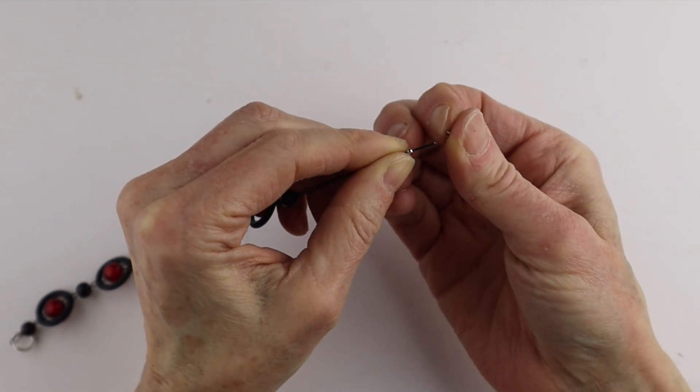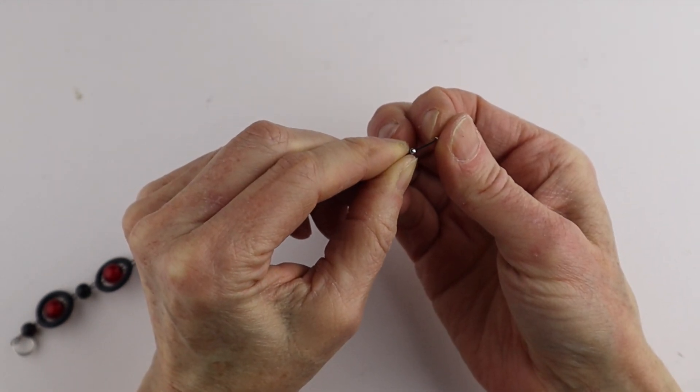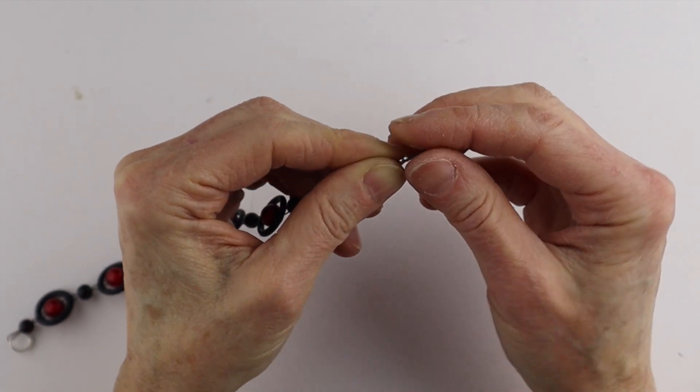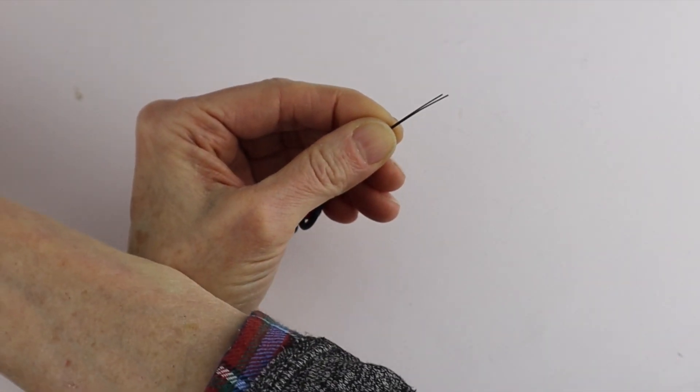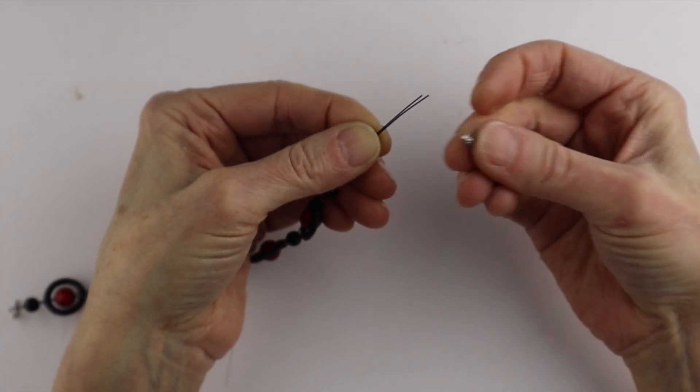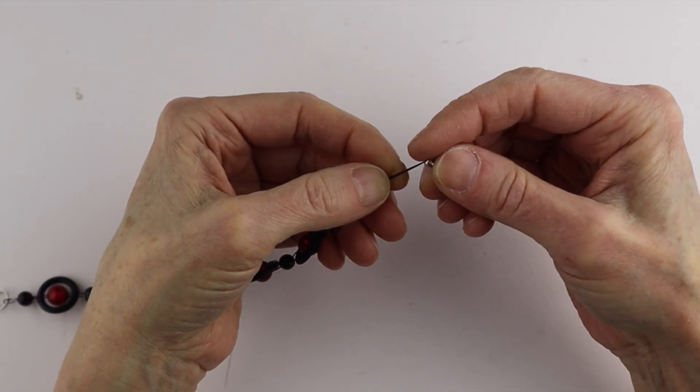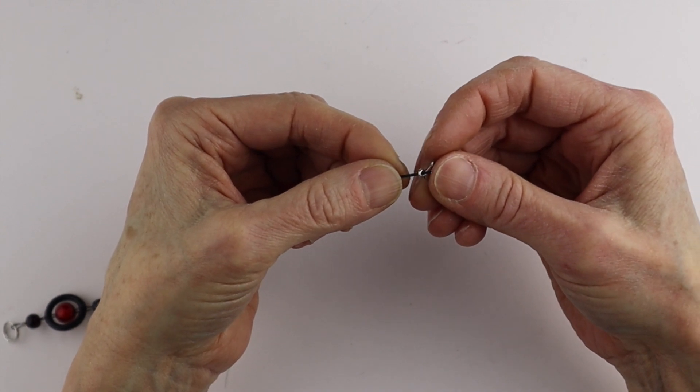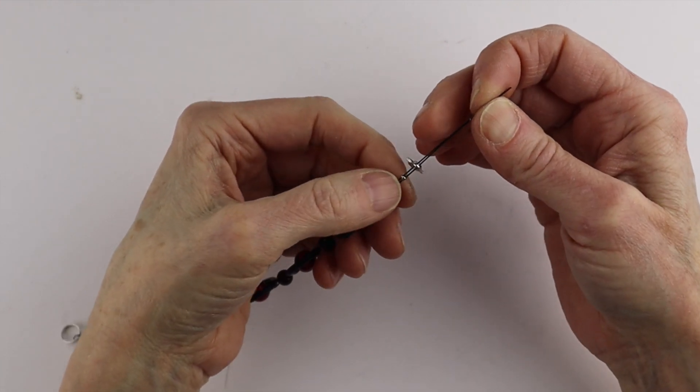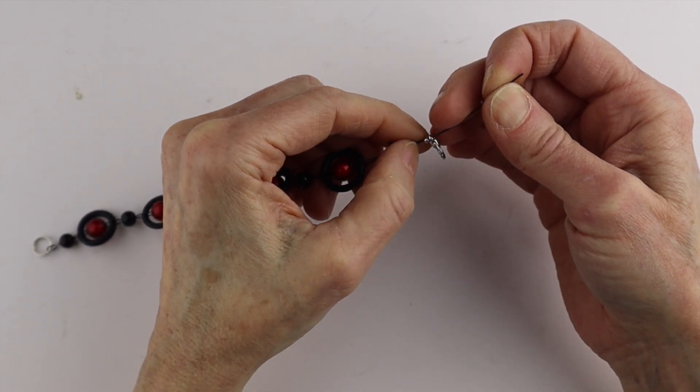If you have bigger crimps, that's fine too. You can either put them right on the clasp or add a jump ring first. I'm going to stick them right on the clasp.